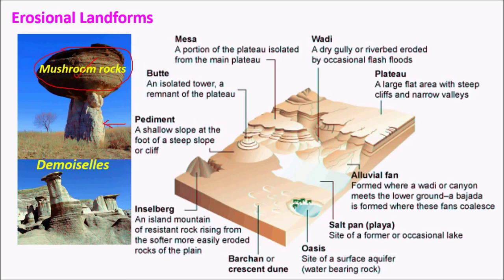The most important erosional landform in arid regions is the plateau — a flat area with steep cliffs, a very hard rock on the surface that resists erosion, and softer rock below that is protected by the harder layer. Over millions of years, erosion gives rise to an isolated plateau called a Mesa. Wadis are dry gullies or riverbeds eroded by occasional flash floods — river-like gully structures formed at the base during heavy rains.